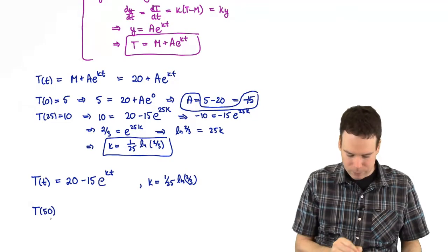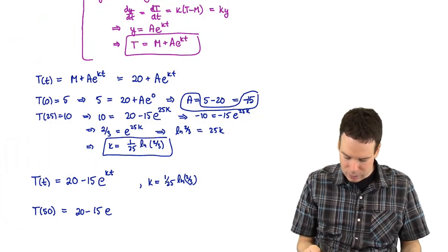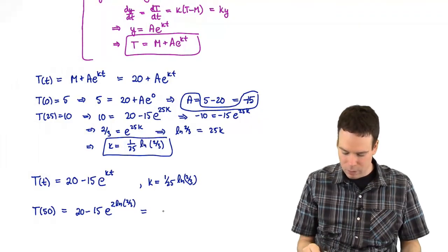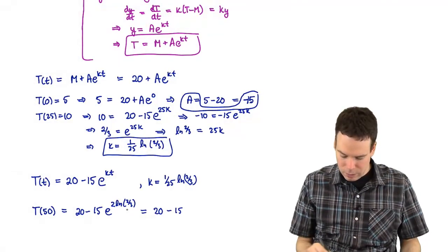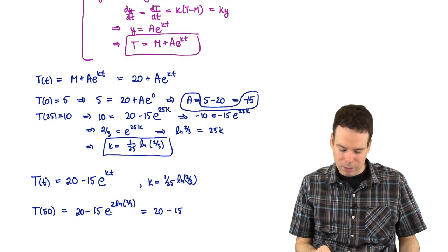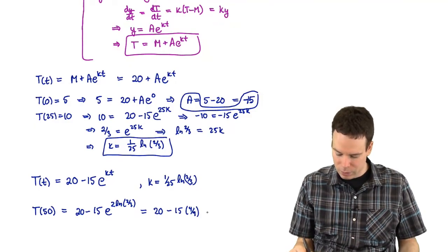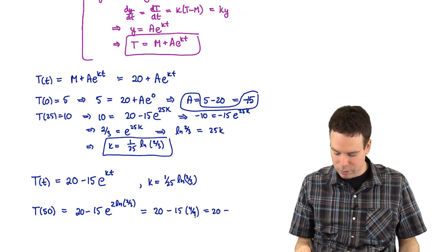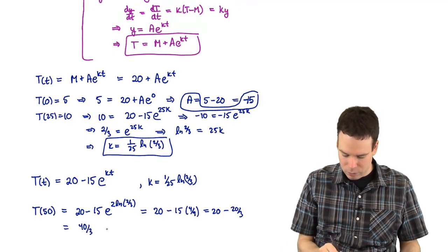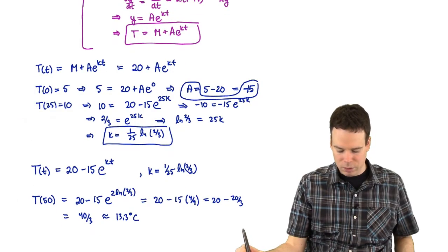Part A: what is the temperature after 50 minutes? We compute T(50) = 20 - 15e^(50k). Since 50 times (1/25) = 2, the exponent becomes 2·ln(2/3) = ln(4/9). So T(50) = 20 - 15·(4/9) = 20 - 20/3 = 40/3 ≈ 13.3 degrees Celsius. After 50 minutes, the temperature is about 13.3°C.